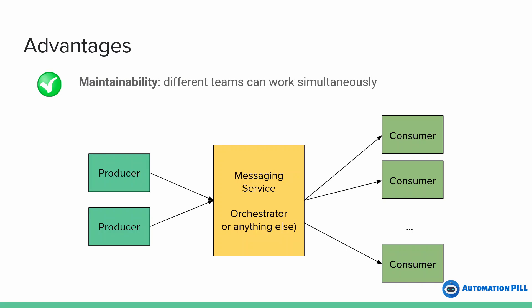Another advantage is maintainability, because one team can work on the producer and another can work on the consumer. They can work simultaneously as long as there is a contract between them. The contract refers to the messages which are exchanged — basically, the producer sends a message with a certain format or certain values, and the consumer is expecting to receive from the other one. If something goes wrong, you know where the problem is, because between these two there is a written agreement.